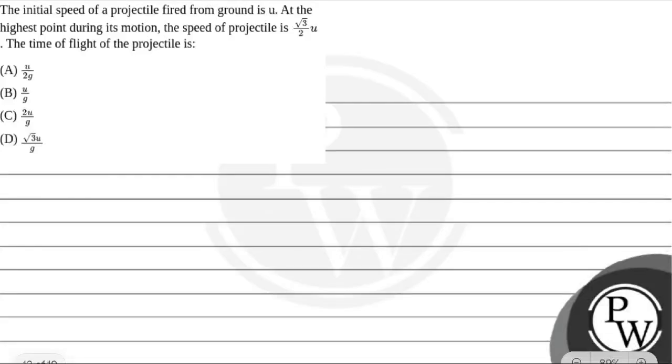Hello, let's read this question. The initial speed of a projectile fired from ground is u. At the highest point during its motion, the speed of projectile is √3/2 u. The time of flight of the projectile is: